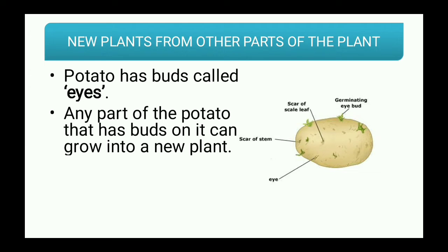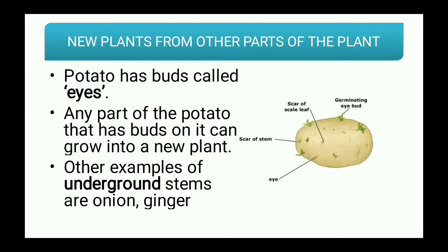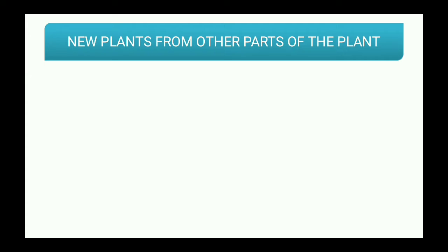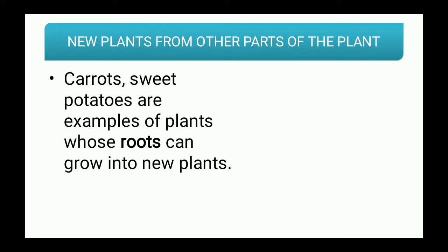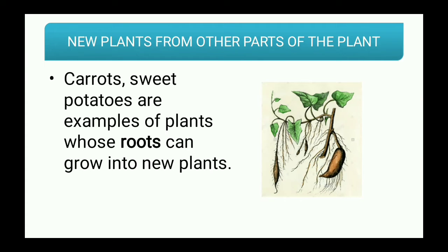There are some other vegetables which can also be called underground stems — the examples are onion and ginger. There are also vegetables whose roots give rise to new plants. Examples are carrots and sweet potatoes — these are plants whose roots can grow into new plants. This is a diagram of a sweet potato.